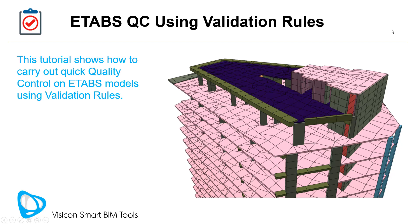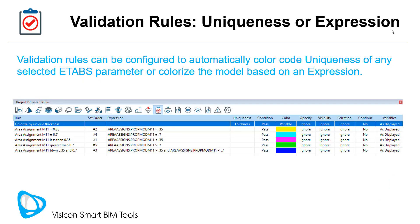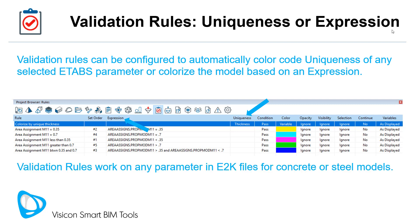This tutorial video shows how to carry out quick quality control on ETABS models using validation rules. Validation rules can be configured to automatically color code the uniqueness of any selected ETABS parameter, or colorize the model based on expressions. Validation rules work on any parameter found in ETABS E2K files for concrete or steel models.